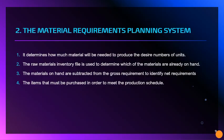Second is the material requirements planning system. It determines how much material will be needed to produce the desired number of units. The bill of materials file is used to explode the bill of materials for each item scheduled for production by multiplying the quantities on the bill of materials times the number of units to be produced. The purpose of this explosion is to determine the total material requirements, called the gross requirements, needed to produce the scheduled products. The raw materials inventory file is used to determine which materials are already on hand, and those on hand are subtracted from the gross requirements to identify what must be purchased to meet the production schedule.